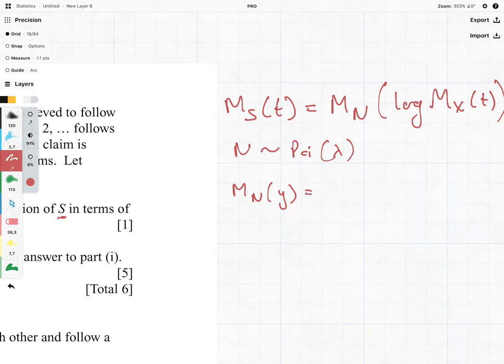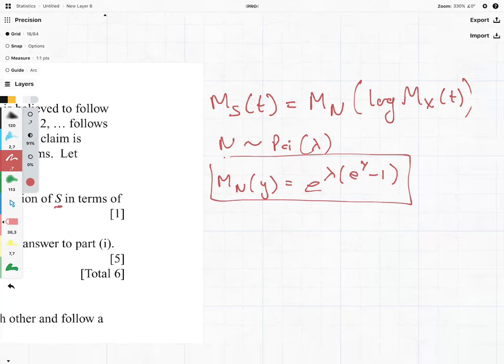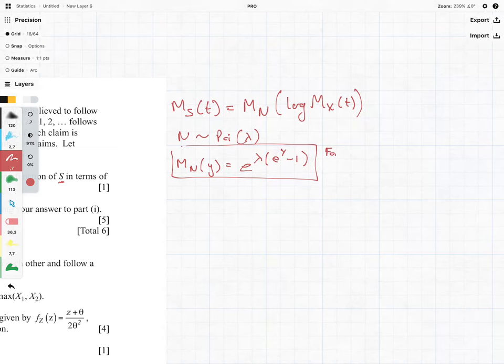would be equal to e to the lambda times e to the y minus 1. Where am I getting this from? I'm getting this from the formula book, which we all should have for the exam. That is the moment generating function of the Poisson distribution.